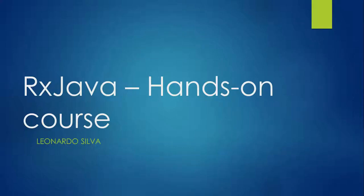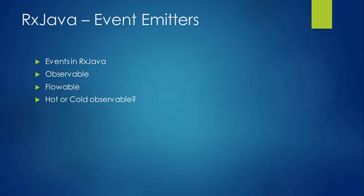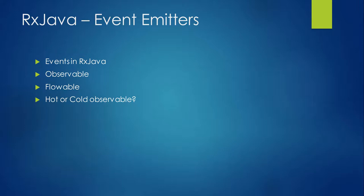Hello guys, welcome to my RxJava hands-on course. My name is Leonardo Silva and today we are going to start our second class. We are going to cover the basic understanding of events: what are events in the RxJava context, what is an observable, what is a flowable, and what's the difference between a hot or a cold observable. This will give us a background to understand the base of event emitters — at least two of them. Next class, we're going to see the other two different event emitters in RxJava.